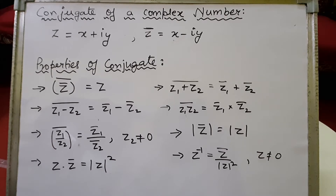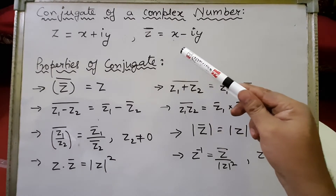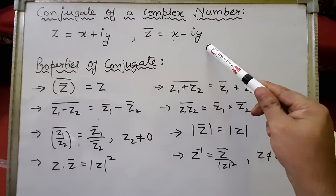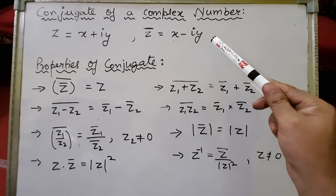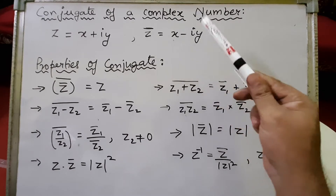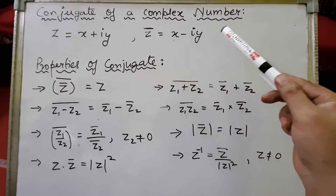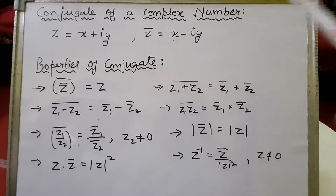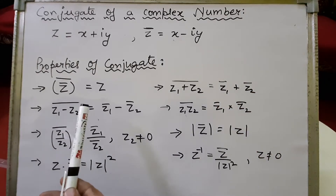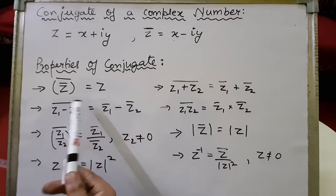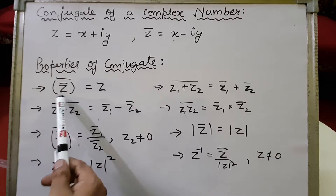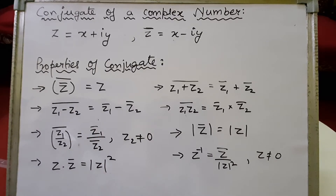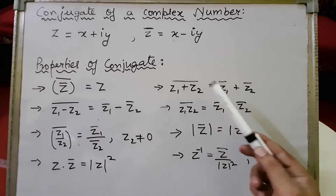Let's see the properties of the conjugate. If z equals x plus iy, then the conjugate of z is x minus iy. If we again take the conjugate of that — z-bar to the whole bar — the negative sign becomes positive again, giving us x plus iy, which is z itself. So the first property is: the conjugate of the conjugate is the same complex number, i.e., z-bar bar equals z.